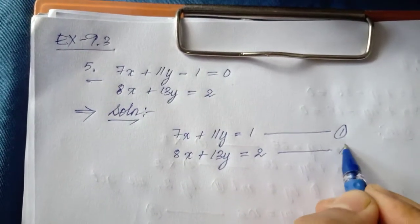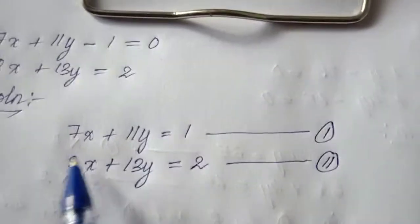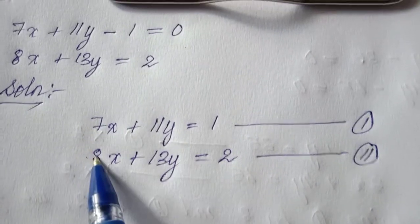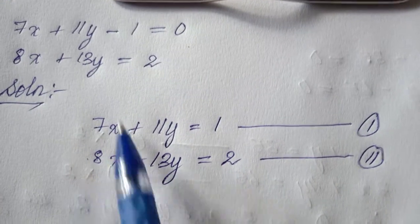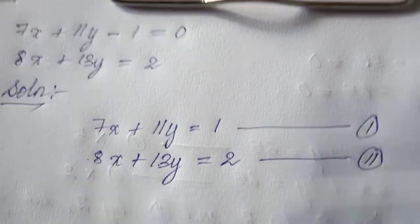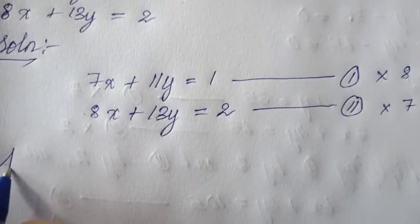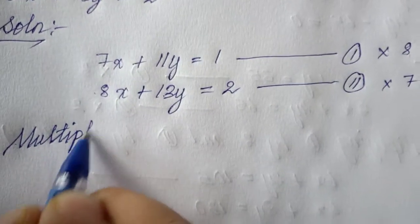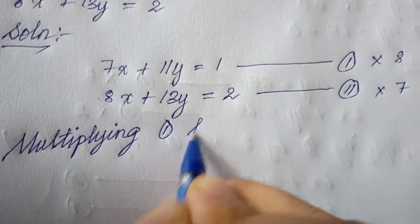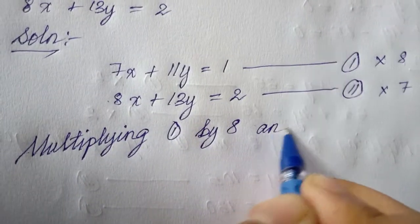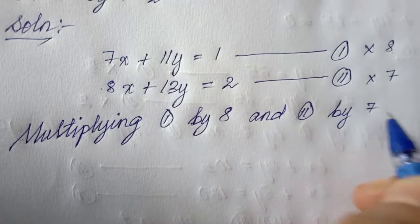Now, by looking at the variables of x and y, I will choose x because it has lower coefficients — 7 and 8 — whereas y has 11 and 13. So I am concentrating on x. I will multiply the equations to make the x coefficients the same: multiply equation 1 by 8 and equation 2 by 7.